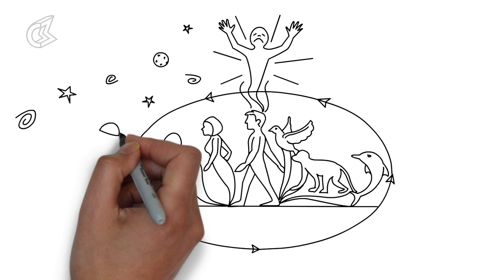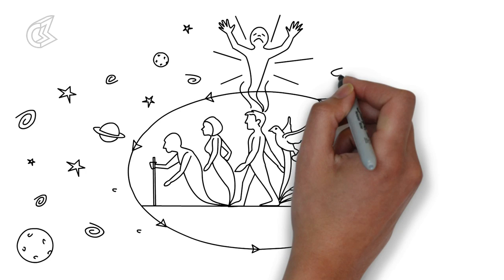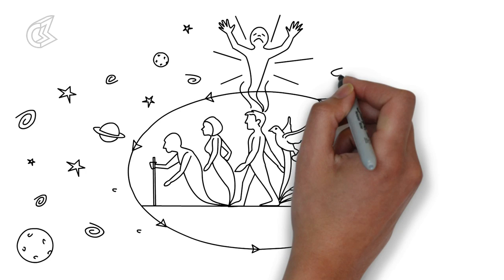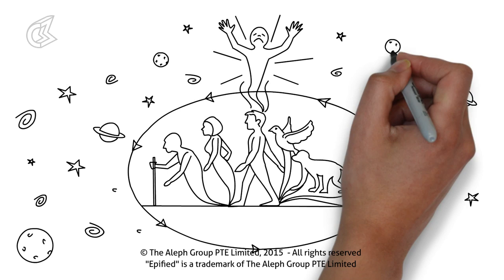With time, the soul learns to shed karmic weight and escapes the cycle of life and death. It becomes one with the universe, which is eternal and infinite. It achieves moksha.